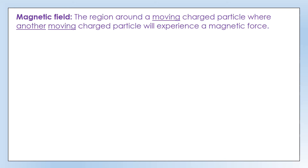Before we go further, let's define some terms. Magnetic fields are produced around moving charged particles — if a charged particle is stationary it doesn't have a magnetic field; it only has one if it's moving. If another moving charged particle enters that region it will experience a magnetic force. You only get magnetic forces between things that both have moving charged particles. Fundamentally, with materials, it's the electrons in the material that are creating and experiencing magnetic fields and forces.